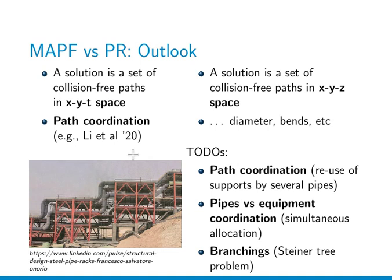As outlook, what remains to be done: we can look at path coordination algorithms which already exist for MAPF, where it is important to reuse supports across several pipes. We should also look at simultaneous allocation of equipment and pipes. The pipe routing problem becomes a Steiner tree problem when several pipes are connected by junctions. This is an important problem with billions of dollars at stake, and we hope it will become a new research direction for the MAPF community.